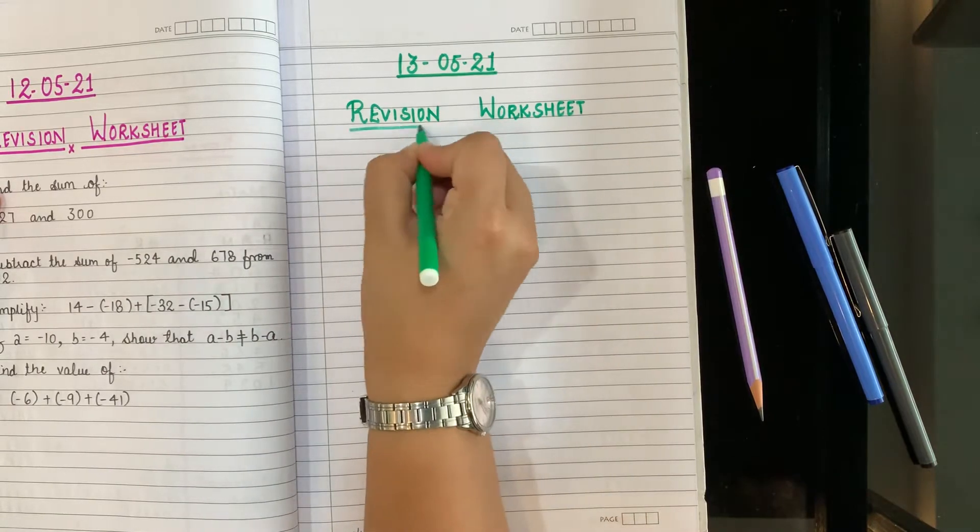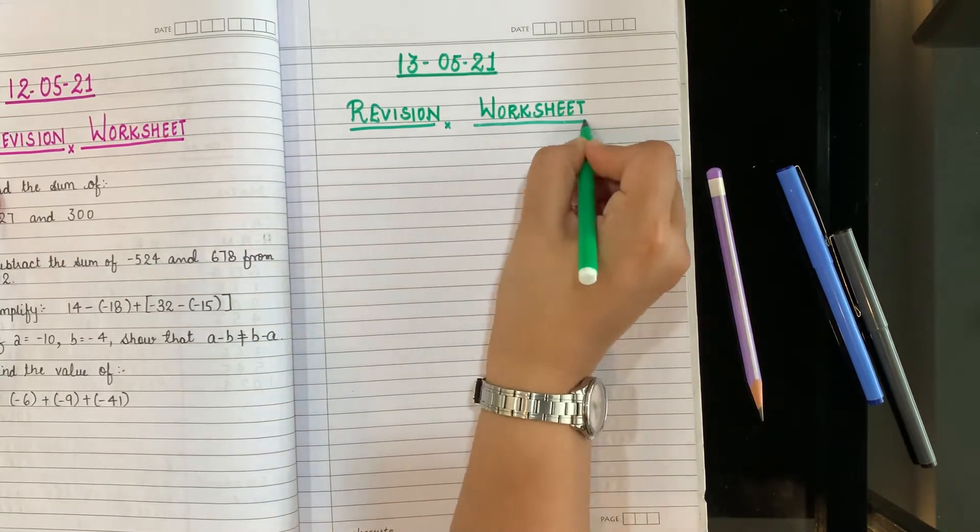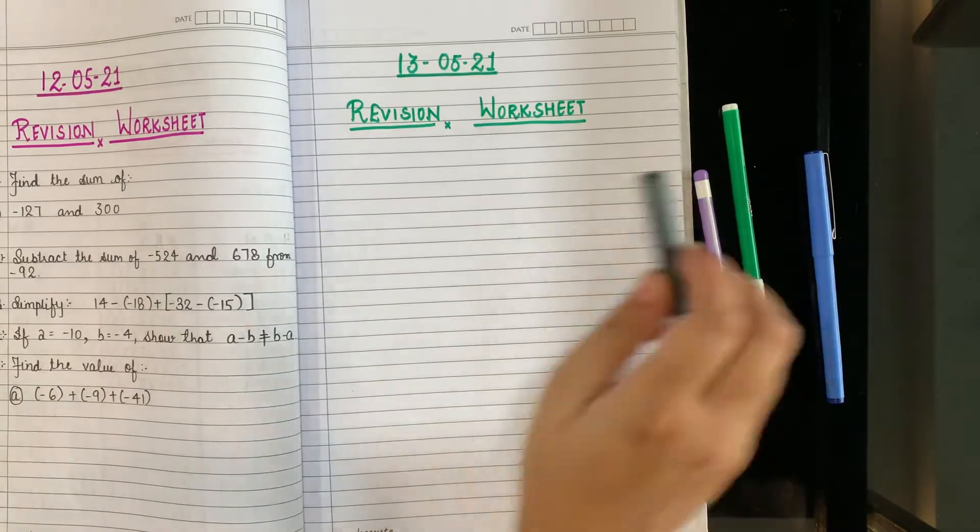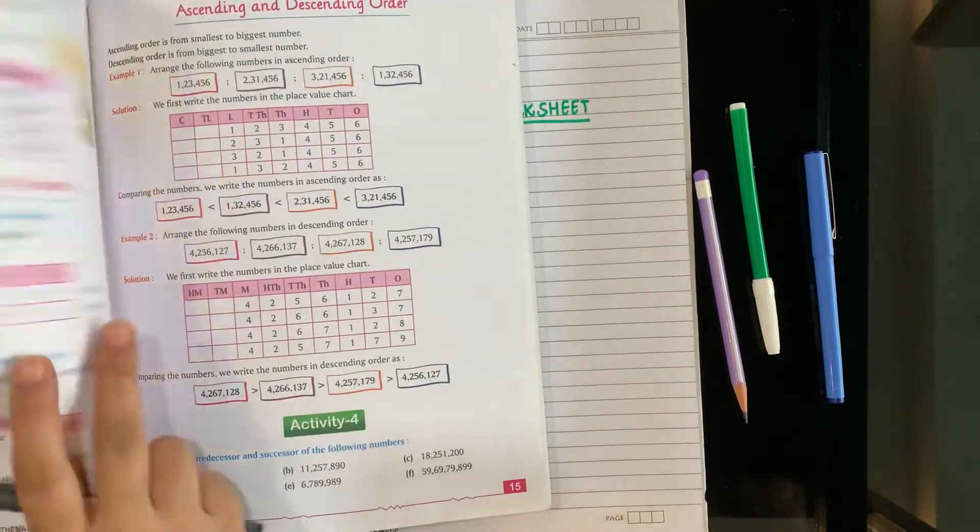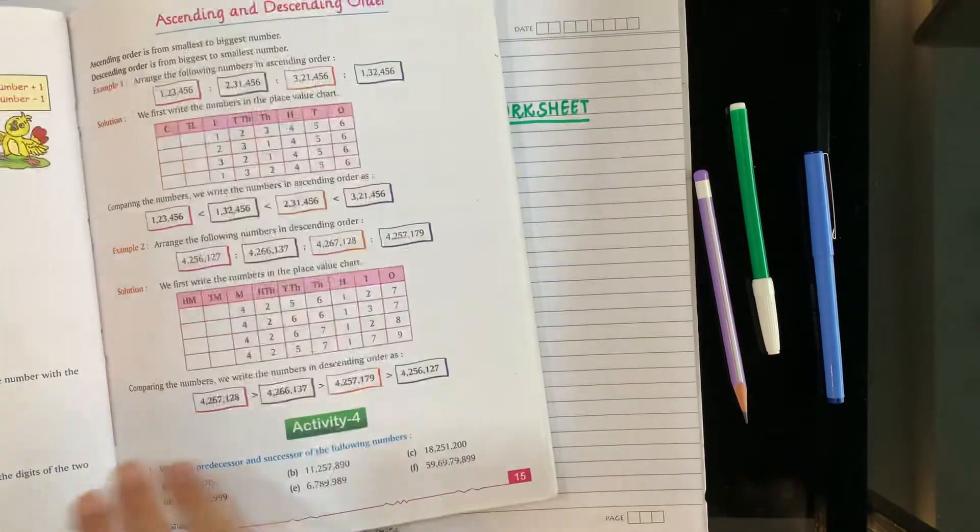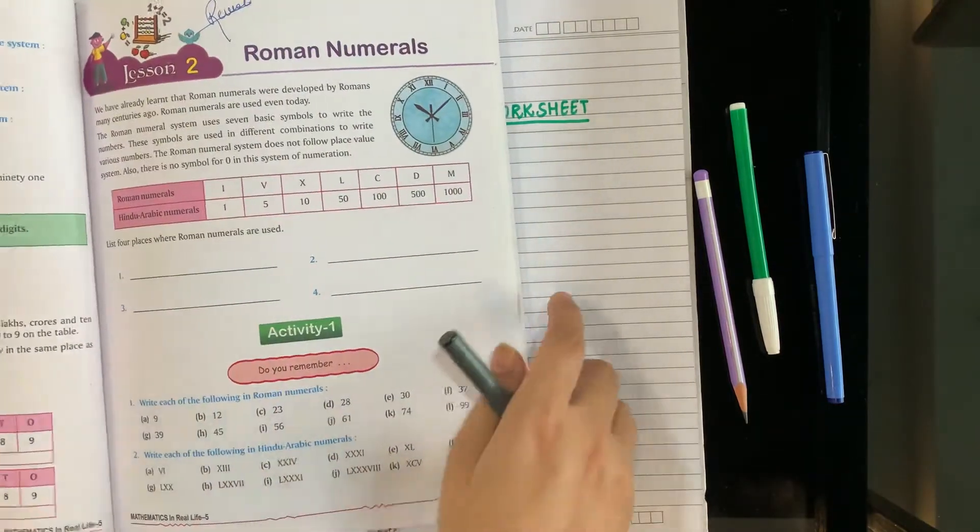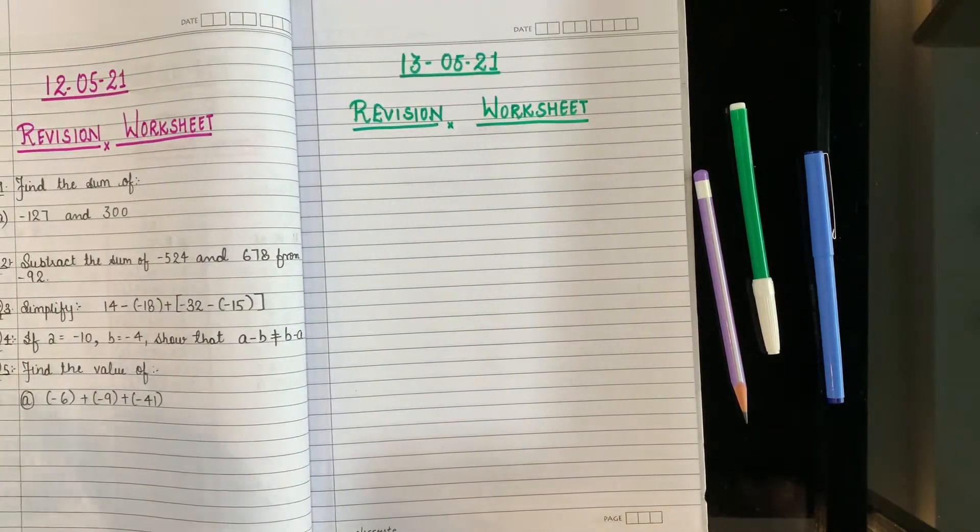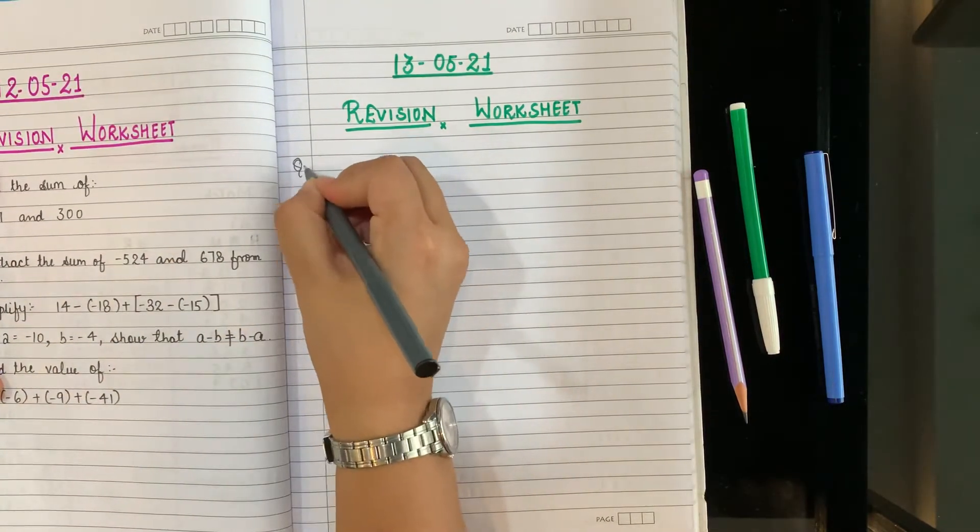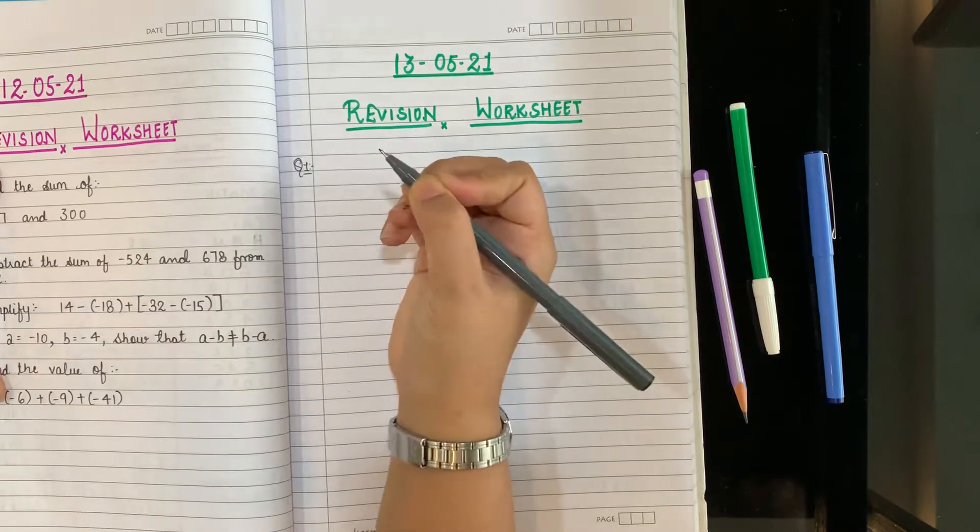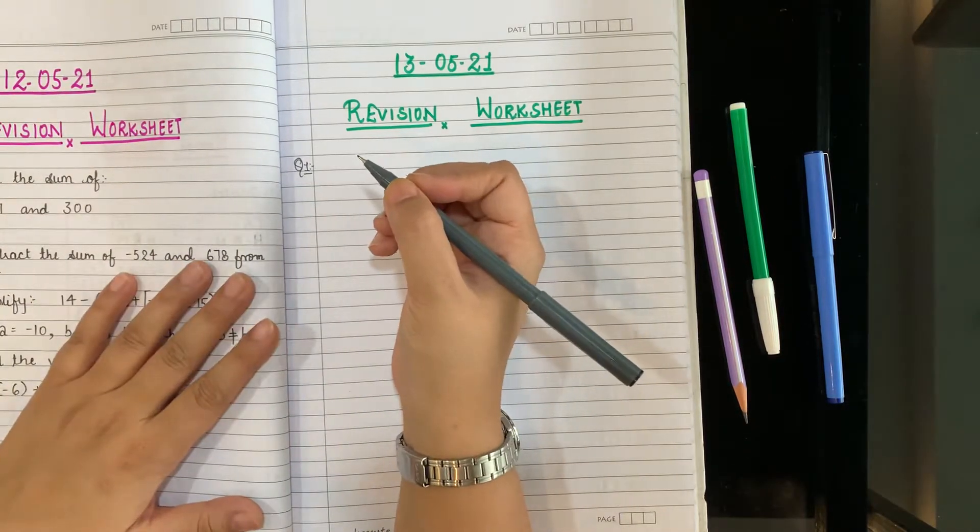Now as you know that your formatives are about to start. Formative is going to start. And what chapter is in formative? Chapter number 2, Roman numerals. So we will do one worksheet related to this chapter. A similar exam will come in your formative, the same type as the worksheet we are doing.